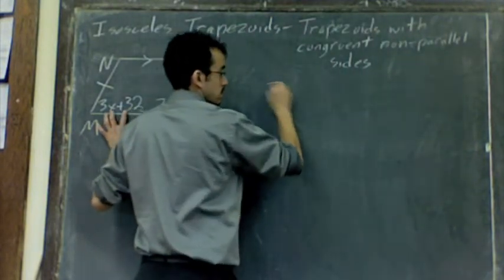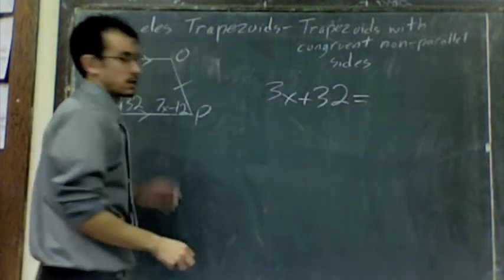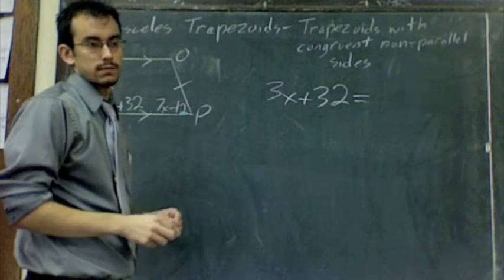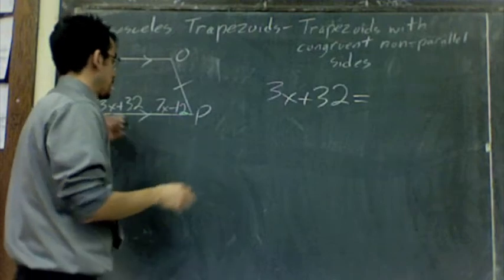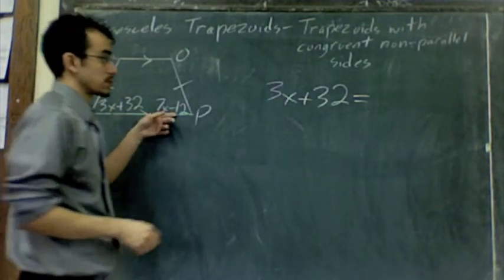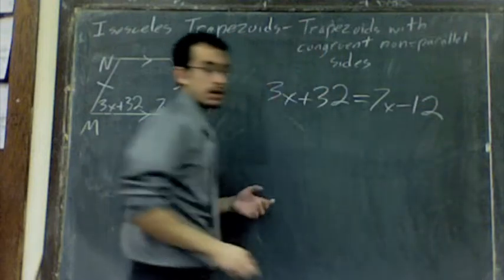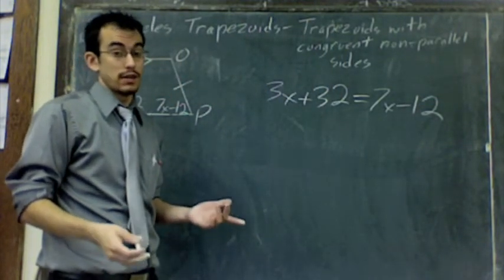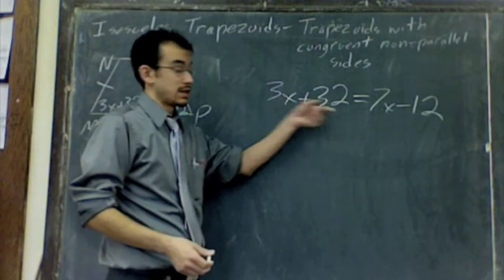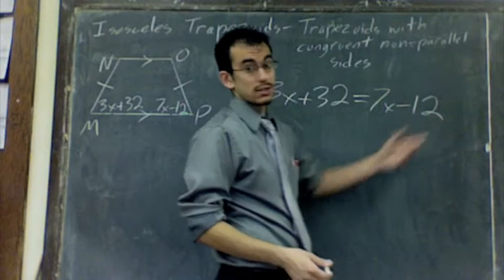Let's write it. 3X plus 32 equals 7X minus 12. As per usual, we're going to solve equations the same way we always do. Combine like terms if you can. Well, this has an X in it, this doesn't, can't combine them. On the right side, this has an X in it, this doesn't, so we can't combine them.